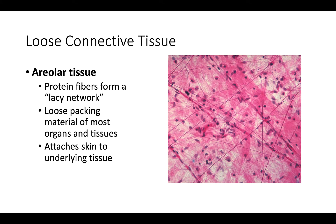Starting with loose connective tissue: areolar tissue is made of a lacy network of protein fibers. It fills the spaces between muscle fibers, surrounds blood and lymph vessels, and supports organs in the abdominal cavity. This type of tissue underlies most epithelia and represents the connective tissue component of epithelial membranes — think of it as an attachment site, like skin to the underlying muscle underneath.